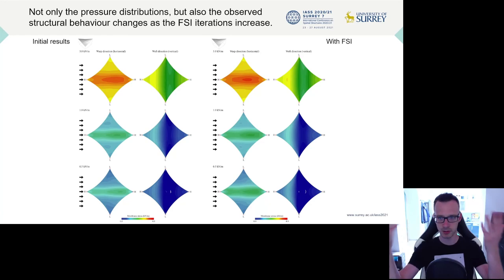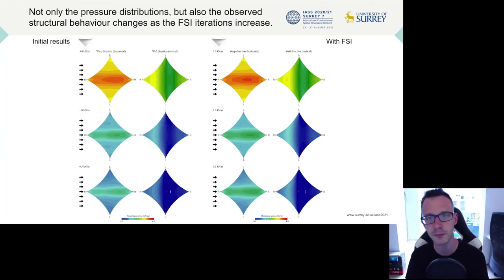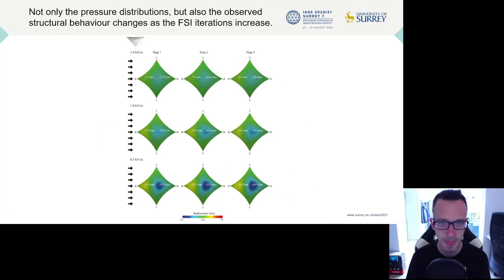And this conclusion continues towards the structural behavior, where the material stresses do still increase or decrease depending on the direction with this looping of the analysis. And the same can be said for the deformations. Now, of course, the effect is less pronounced for the high pre-stress case, where we can just see between step one and step three an increase of one to two millimeters.